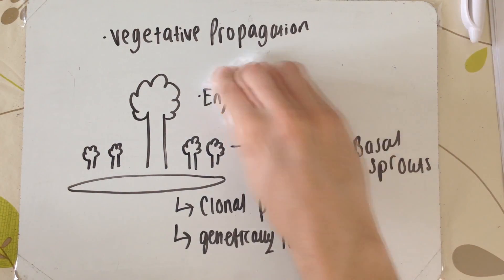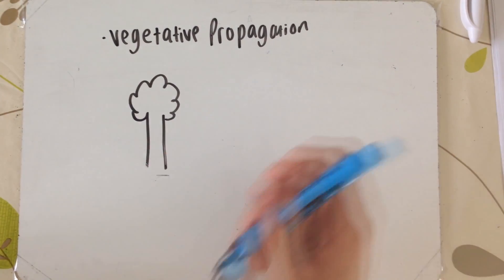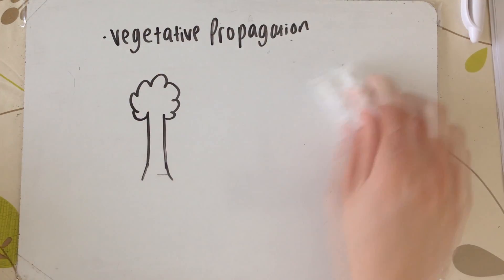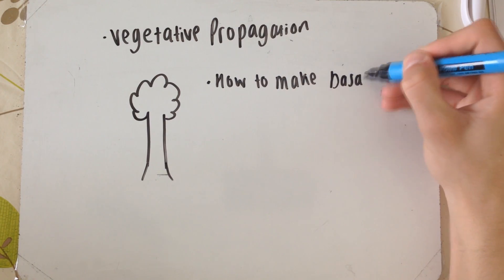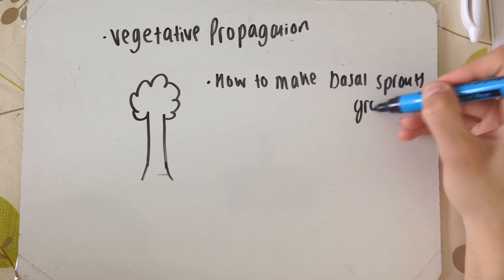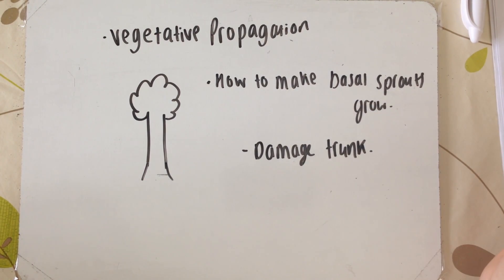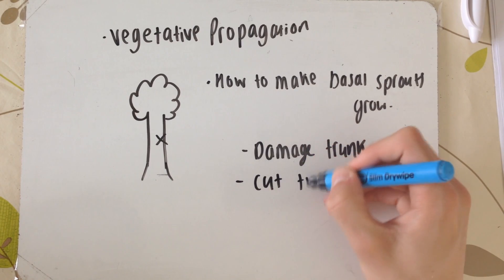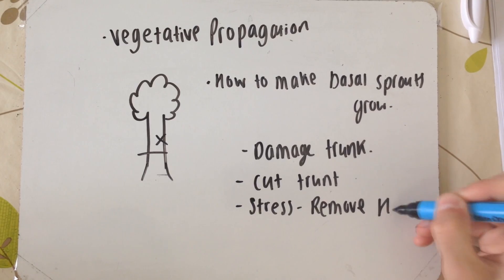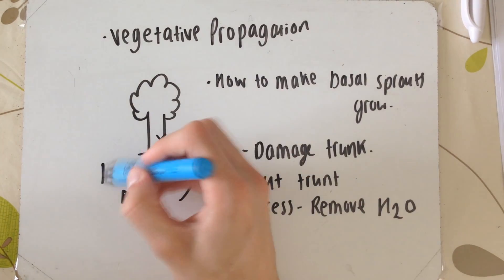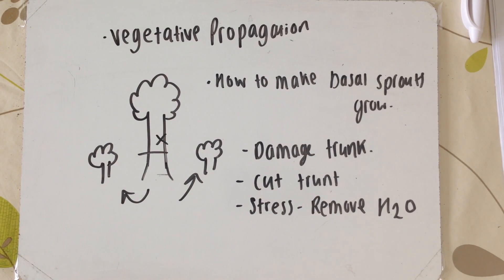A question could come up asking essentially how you make basal sprouts grow — how do you get your English elm tree to asexually reproduce? The first thing you can do is damaging the trunk; taking a bit of the trunk out will eventually cause the tree to produce these basal sprouts. The next method is cutting the trunk — chopping the tree down at trunk level will do the same thing. Or stressing the tree by removing water from the environment so it can't take up water from the soil, which makes the tree think it's going to die and triggers reproduction.